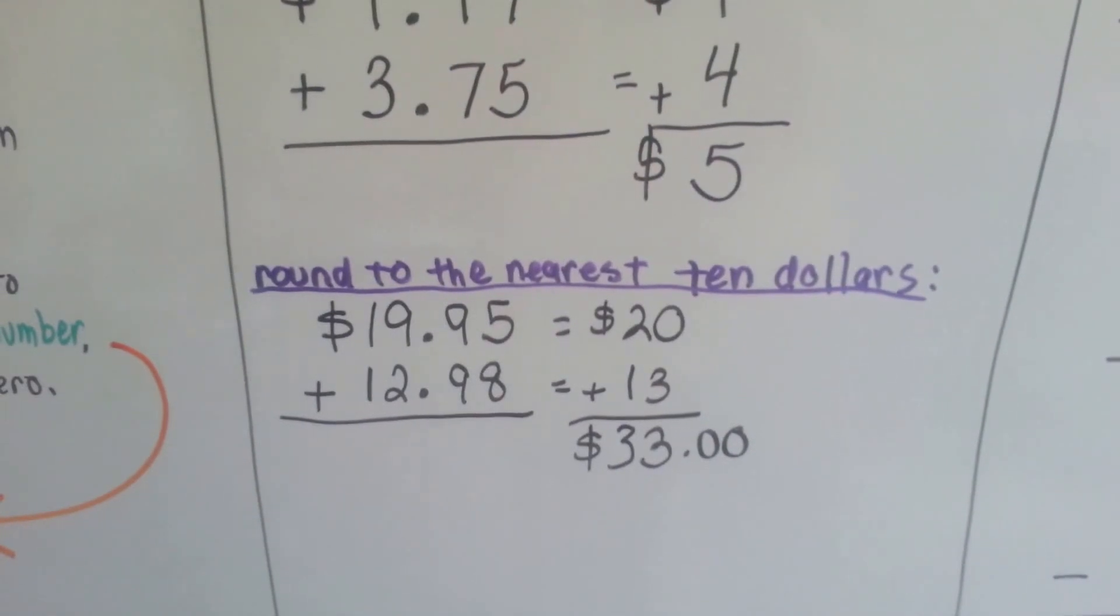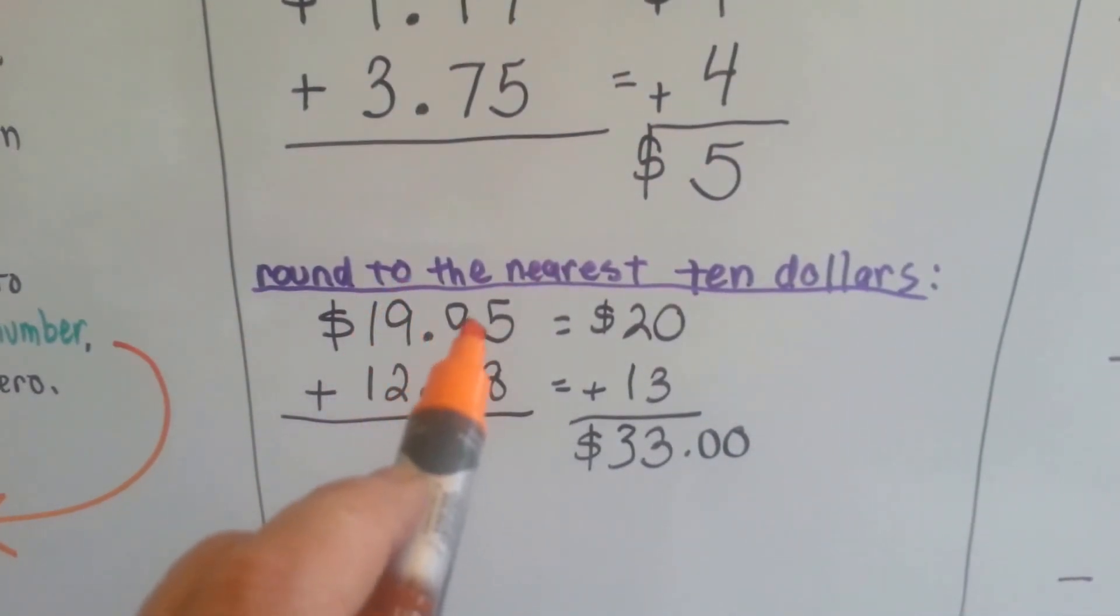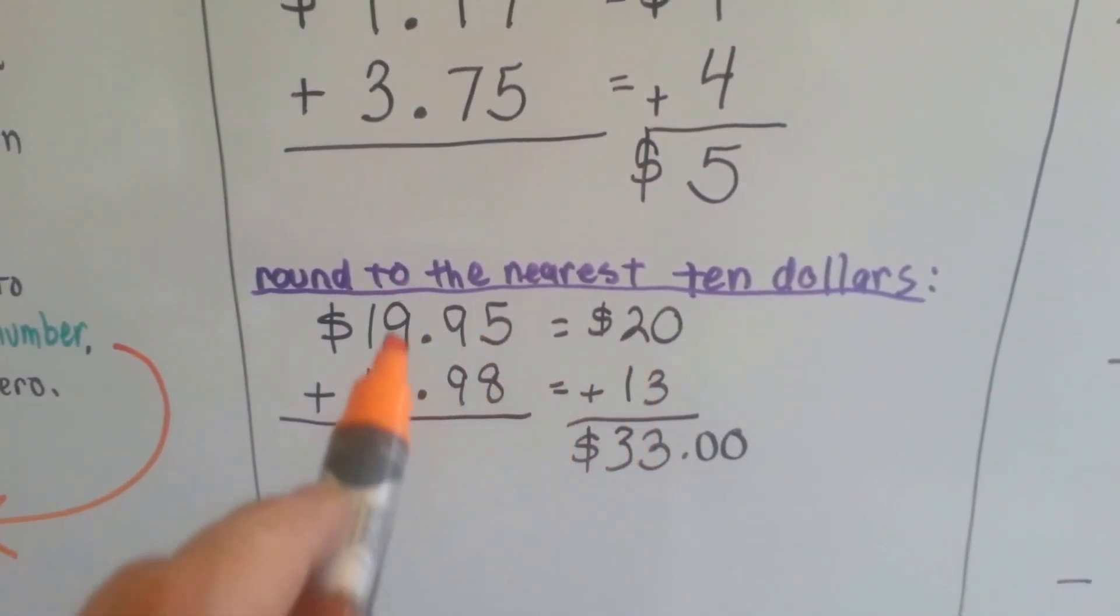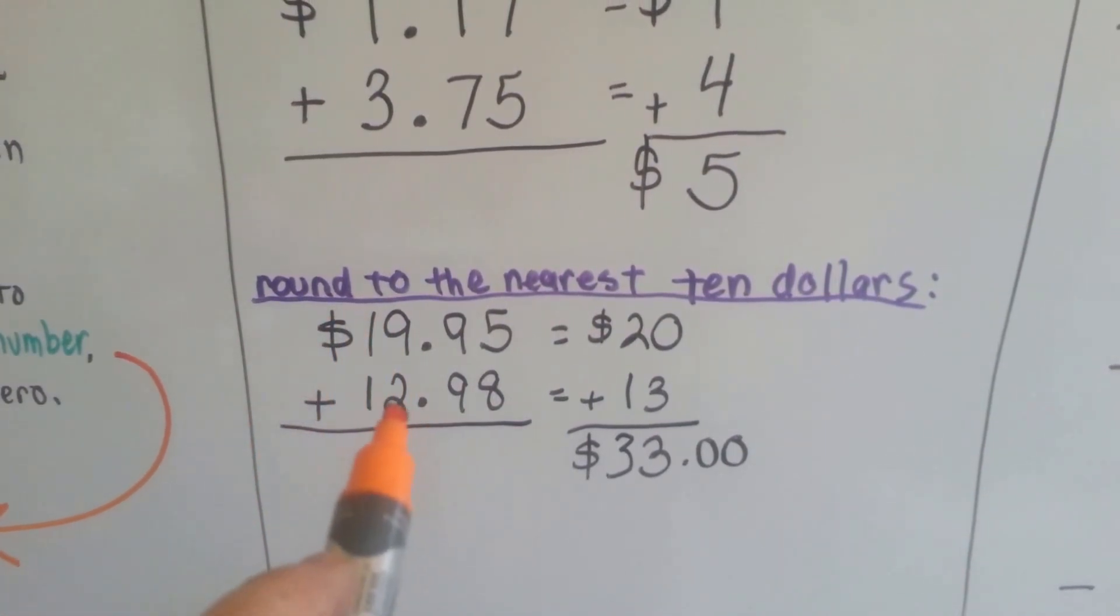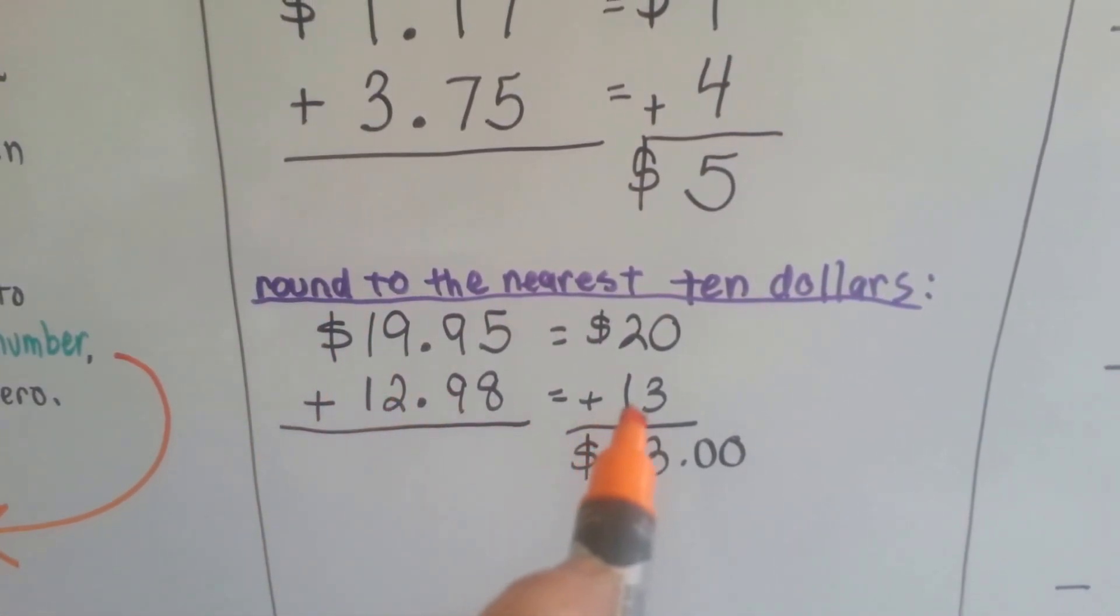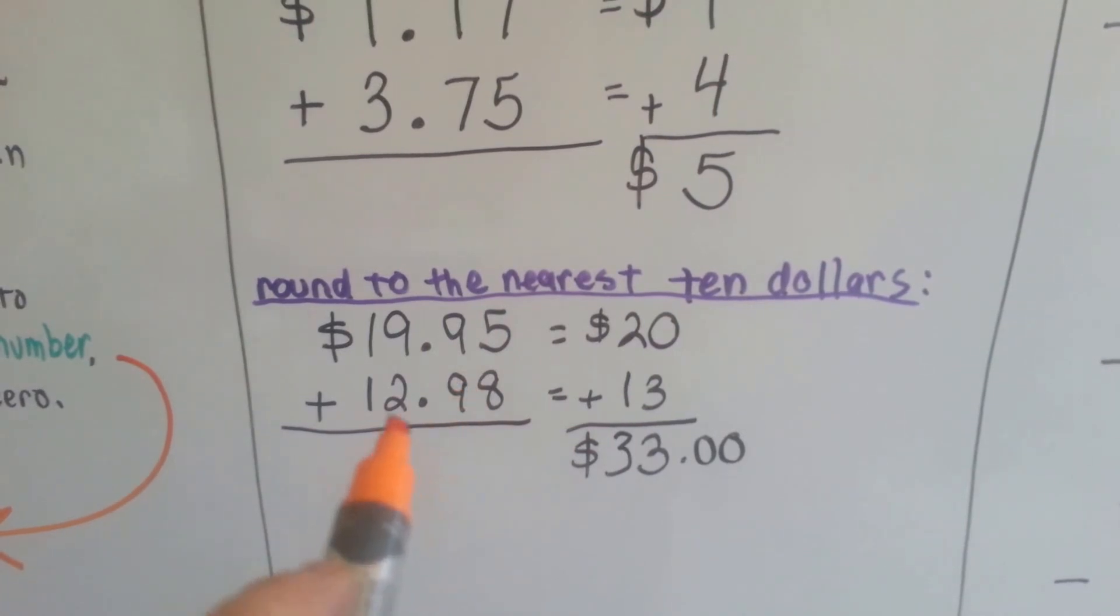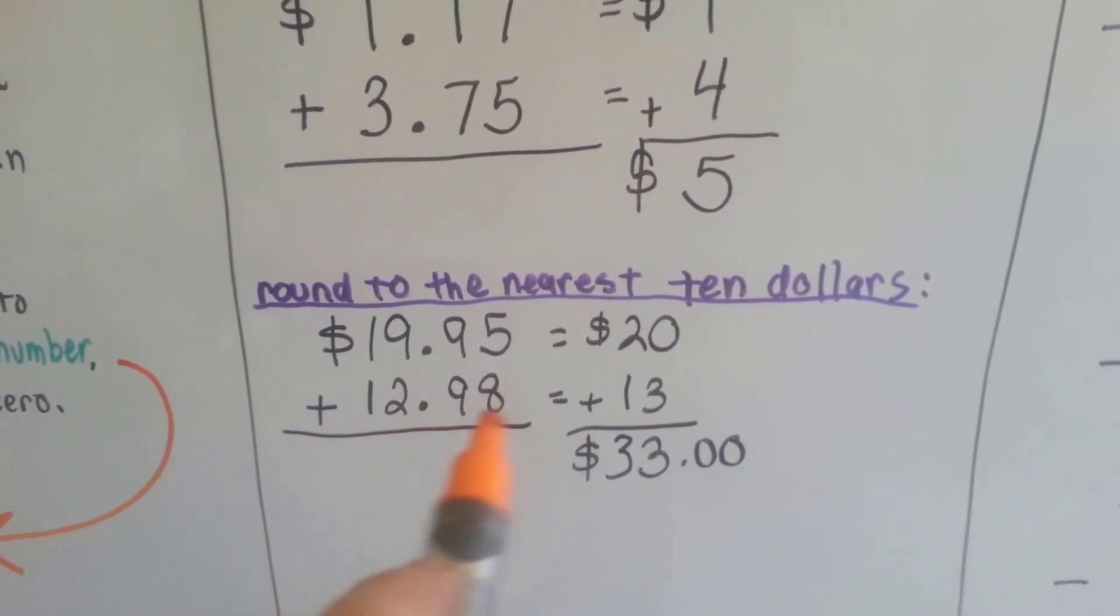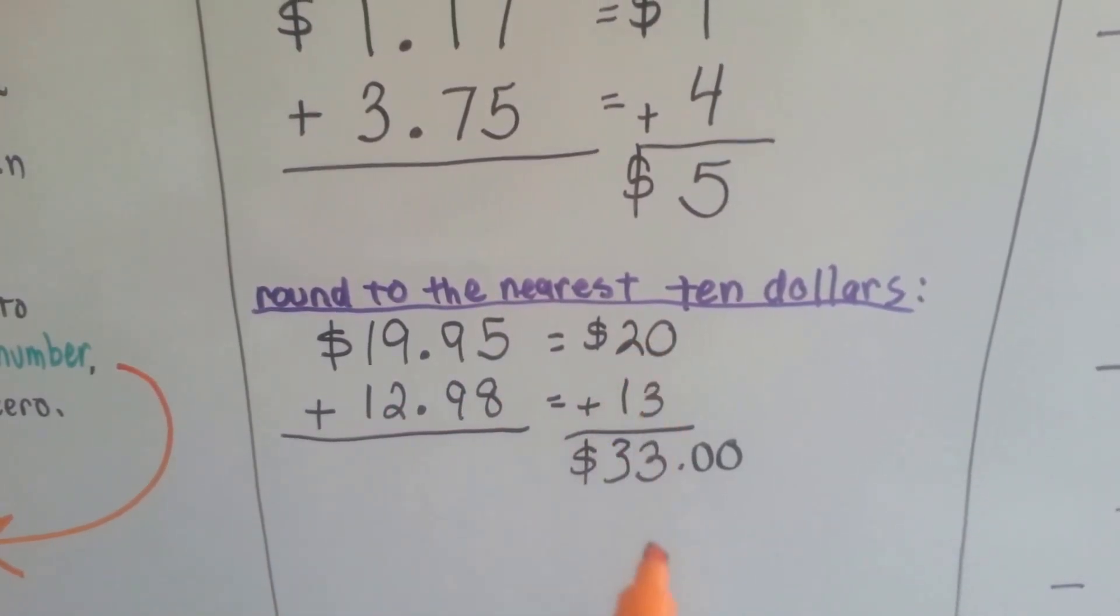We can round to the nearest $10. $19.95 would round to $20 because the 9 tells the 1 to go up to 2. And $12.98 would round to $13 because this 9 tells the 2 to go up to a 3. And then they become zeros. And then we can quickly add $33.